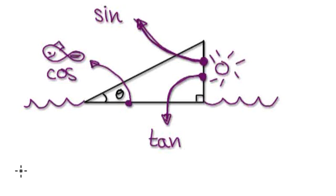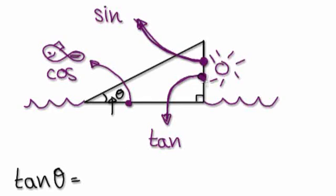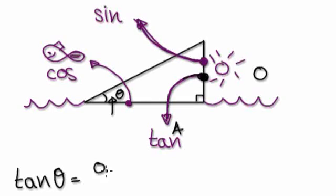Remember, you're lying on the beach and you're going to get a sun tan. So tan theta — if you tan this angle here — equals: look at this, tan is this one. You start here at the opposite, then you hit the adjacent. So tan theta equals opposite over adjacent.